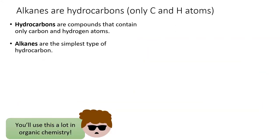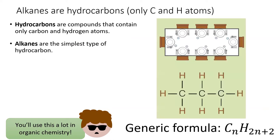Alkanes are a type of hydrocarbon, meaning that they are formed of only carbon and hydrogen atoms. The structure of an alkane contains two hydrogen atoms for every carbon atom, plus two more hydrogen atoms at the end — sort of like if a dinner table were a string of carbon atoms and the chairs were hydrogen.